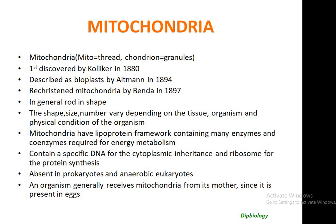In plant cells the number is less as compared to animal cells. Though distributed evenly in the cytoplasm, they may be restricted to a particular area where heavy demand for energy has to be met, for example in muscle cells, rods and cones of the eyes. Mitochondria have a lipoprotein framework containing many enzymes, and contain specific DNA for cytoplasmic inheritance and ribosomes for protein synthesis. They are absent in prokaryotes and anaerobic eukaryotes. An organism generally receives mitochondria from its mother since it is present in the egg.